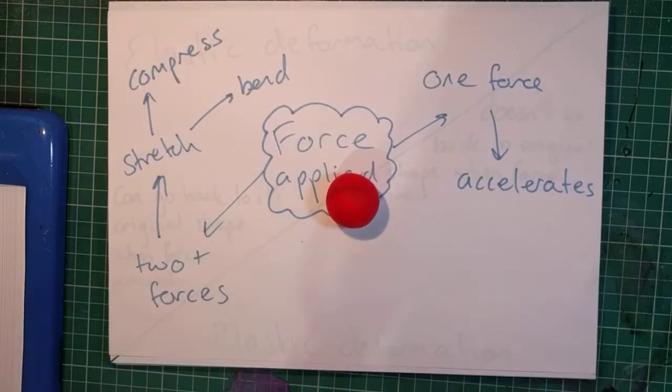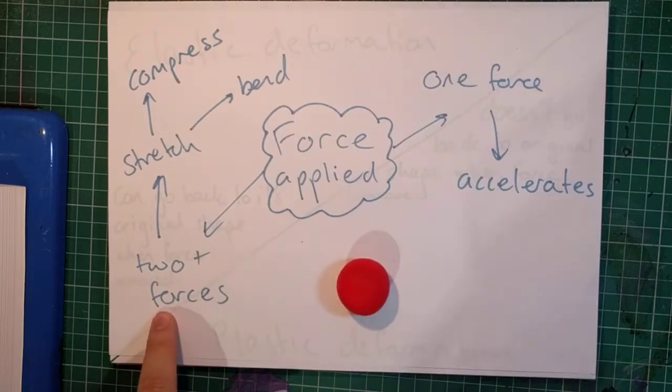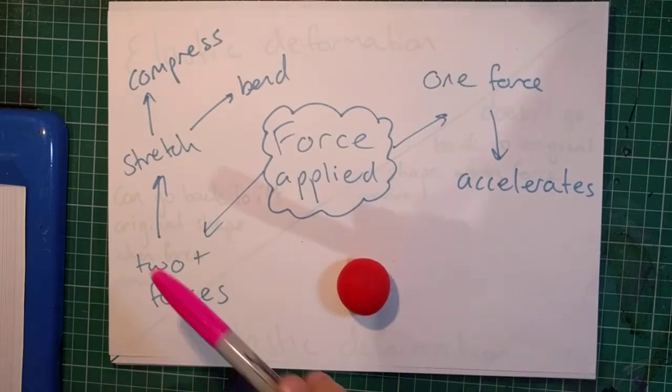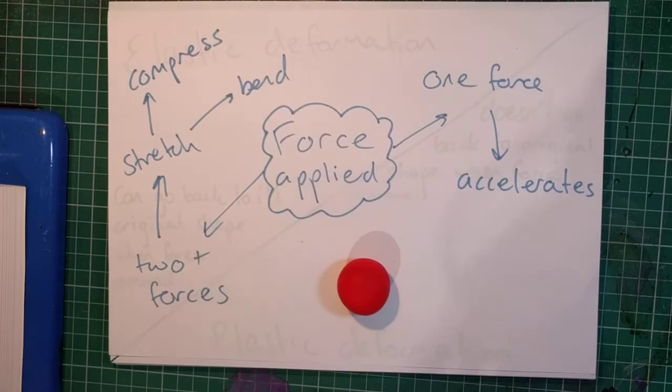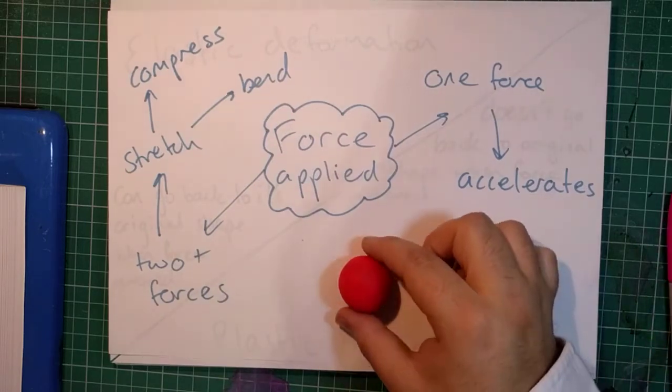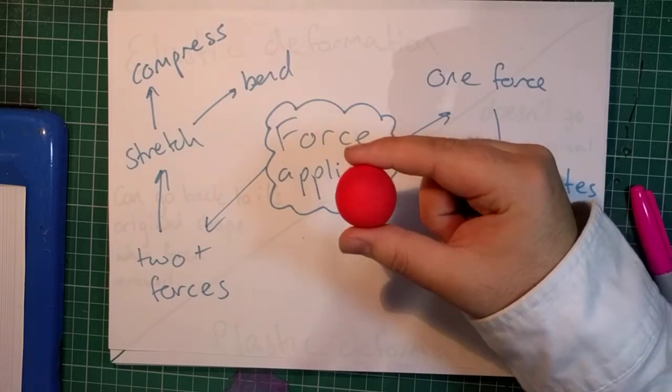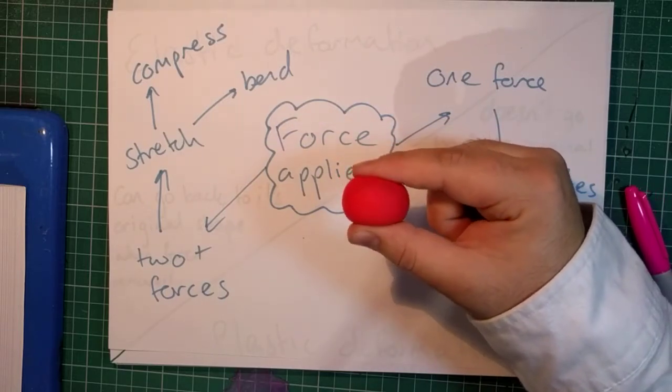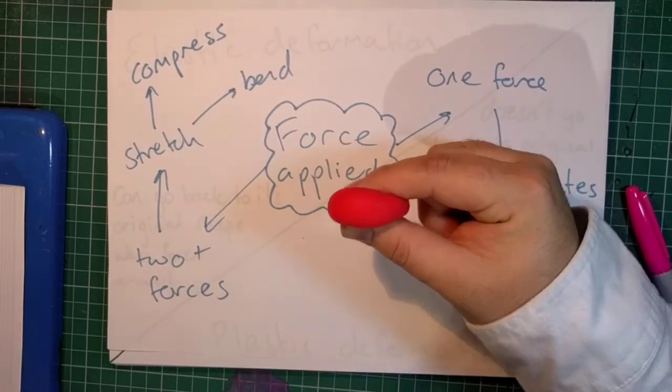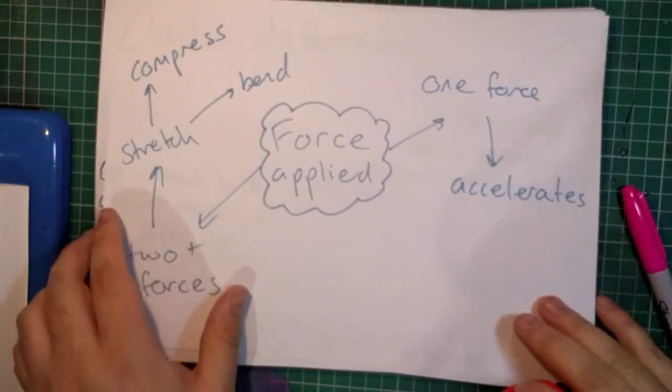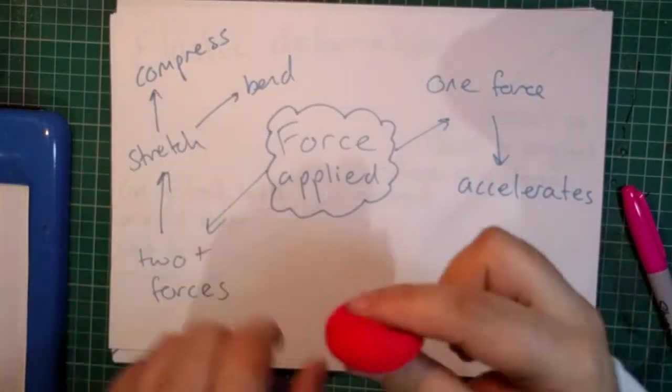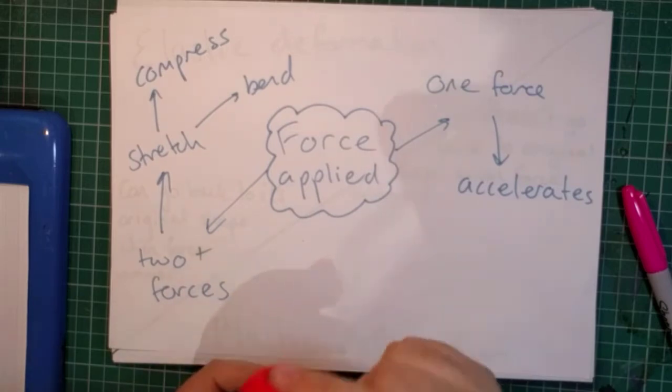On the other hand, in a situation where you have two or more forces acting on an object, then you have a range of things that can happen. For instance, if those two forces, in this case the pressing of my thumb and my forefinger, are both acting towards the object, then that object can be compressed, as shown in the top corner here, which is a deformation, a change in shape.